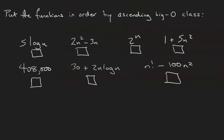One last example. This time we've got a list of functions we're going to put in order from smallest to largest big O class. If two functions have the same big O class we're going to give them the same number. So from this list the lowest order function is the constant 408,000. I want to point out it doesn't matter how big 408,000 is. The point is that 408,000 doesn't grow and we're talking about growth.